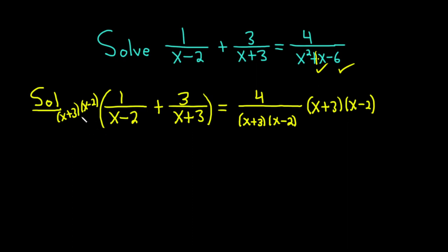So I'm not going to skip any steps here. Times 1 over x minus 2. So I'm going to write it like that. x plus 3, parentheses x minus 2, times 1 over x minus 2. And we have a plus sign.